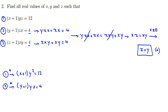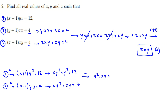Expanding the first equation gives xy² + y² = 12. Expanding the second gives xy² + xy = 4. Subtracting the second from the first: y² − xy = 8. Rearranging: y² − 8 = xy, so dividing both sides by y (noting y ≠ 0) gives x = (y² − 8)/y. Call this equation ★★.